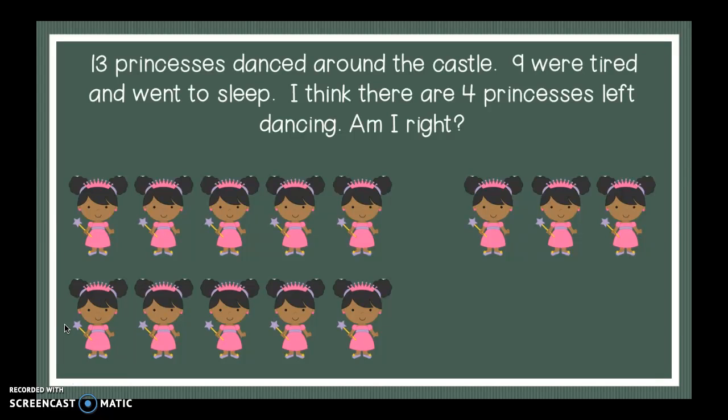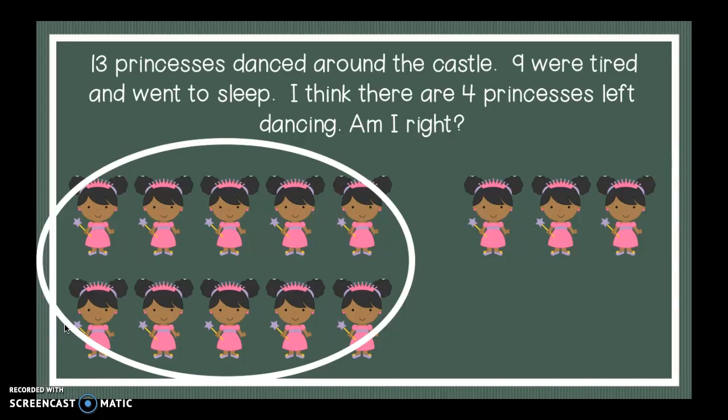Okay, you should know at this point if I'm right or if I'm wrong. Yesterday I was wrong. Hopefully today I'm right. Let's see. I'm going to read it one more time. 13 princesses danced around the castle. Nine were tired and went to sleep. Now, I think there are four princesses left dancing. Am I right? Let's see.